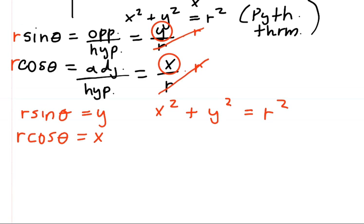In this case, x is r cosine theta. So let's replace x squared with r squared cosine squared of theta. And y squared would be r squared sine squared of theta. And this still all equals r squared.